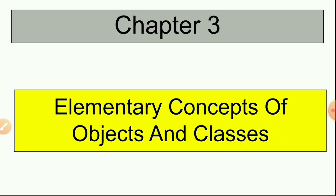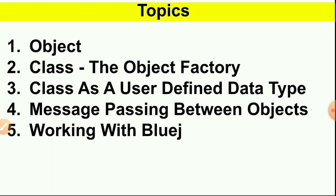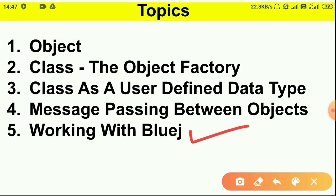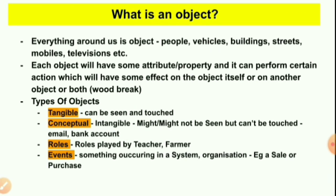Let's begin. The topics to be covered in this chapter are: first, objects; second, class and why class is known as object factory; then class as a user-defined data type; then message passing between objects; and finally working with BlueJ. Working with BlueJ I've already covered in the previous video in quite detail, so if you haven't watched that video you can watch it. I will not be covering it again.